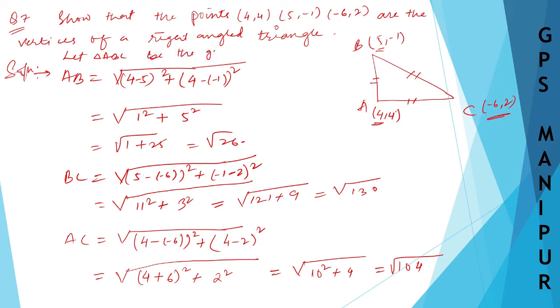So in the beginning, you can write: let triangle ABC be the given triangle. Be the given right angle triangle. Now we need to prove all these points are the vertices of the right angle triangle. So what is the formula for right angle triangle? We know something called Pythagorean theorem.